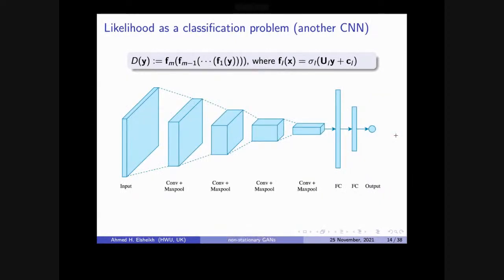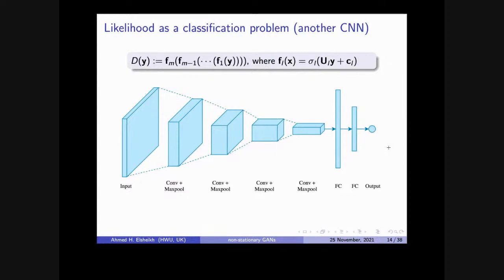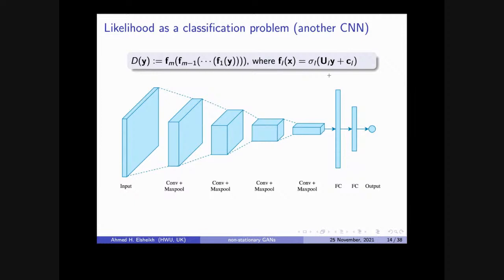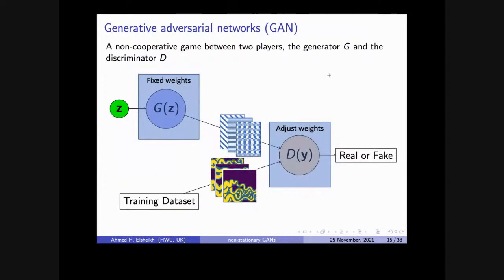We get at the end true or false: is this a good geological image or a bad one? This is another neural network whose weights we also need to find. GANs is the algorithm that can find the weights of both networks together. This is the invention of Ian Goodfellow — the idea itself is probably older, but in 2014 he really developed the algorithm to be usable and programmed it.